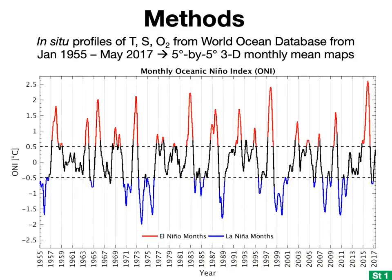To do this work, we first gathered profiles of temperature, salinity, and oxygen from the World Ocean Database, which gathers information from all research cruises taken between roughly 1955 and 2017. For some analyses, we binned these profiles onto five-by-five horizontal degree monthly mean maps. Our ENSO index of choice was the ONI, the Oceanic Niño Index.